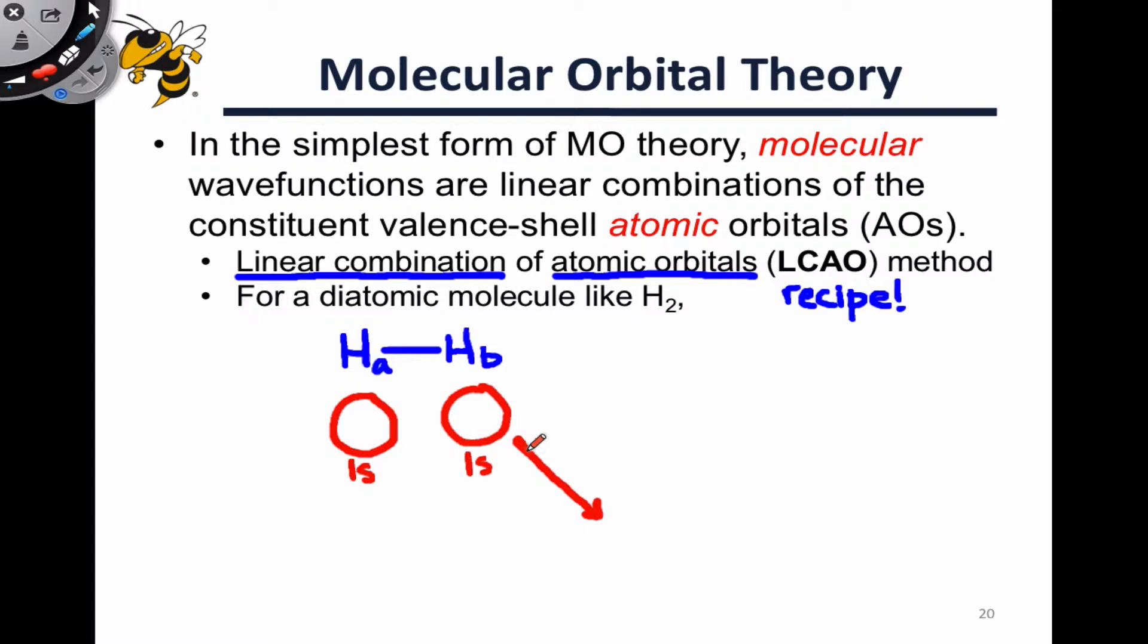We need to produce two molecular orbitals, by the way, because the number of atomic orbitals input needs to equal the number of molecular orbitals out, so that we end up with enough molecular orbital slots, enough orbitals to fill in the maximal possible number of electrons that the molecule could contain.